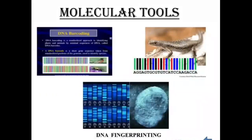The next category is molecular taxonomic tools. Some techniques used to identify organisms in molecular taxonomy are: DNA barcoding, DNA hybridization, DNA fingerprinting, RFLP (Restriction Fragment Length Polymorphism), and PCR (Polymerase Chain Reaction). These molecular data are used to identify and classify organisms.